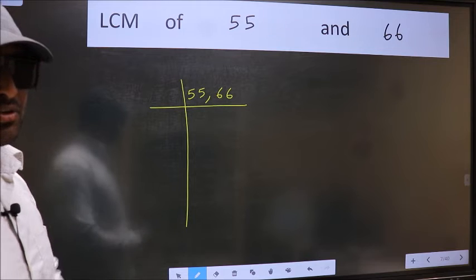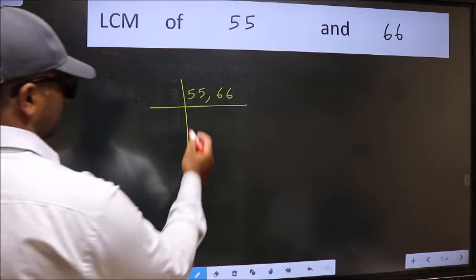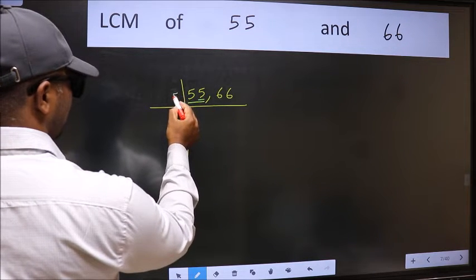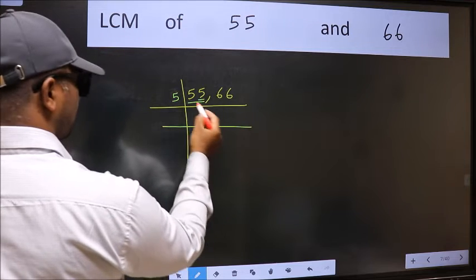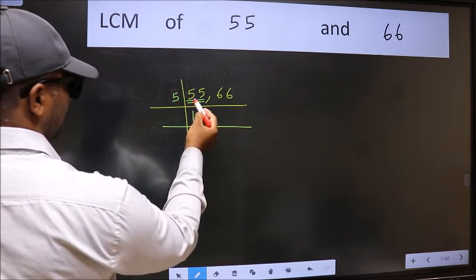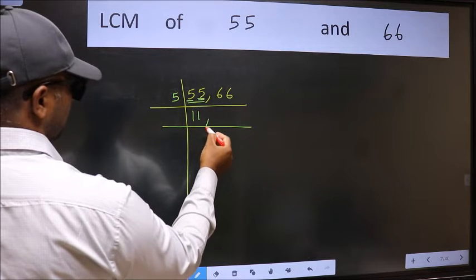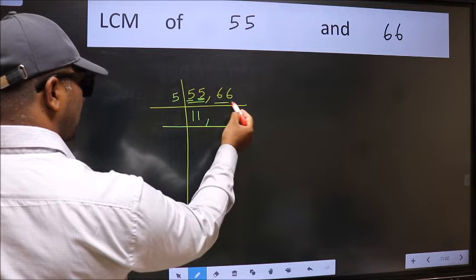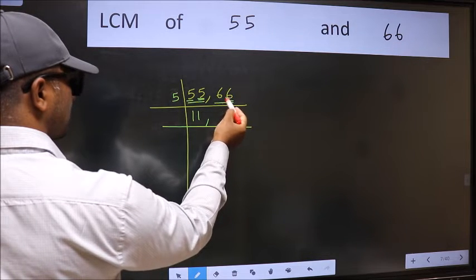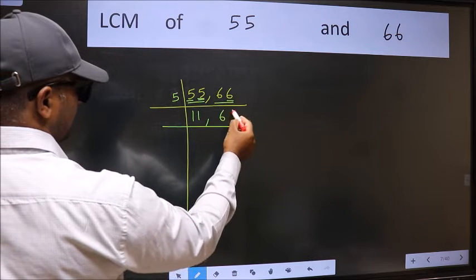Now you should focus on the first number which is 55 here. In this number, last digit 5, so take 5. First number 5, when do we get 5 in 5 table? 5 once 5. The other number 5, when do we get 5 in 5 table? 5 once 5. The other number 66, last digit neither 0 nor 5, so this number is not divisible by 5. So you write it down as it is.